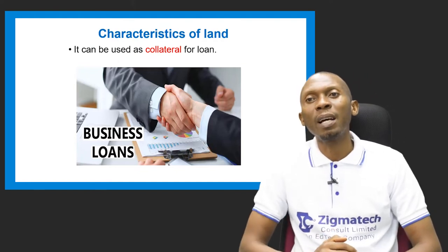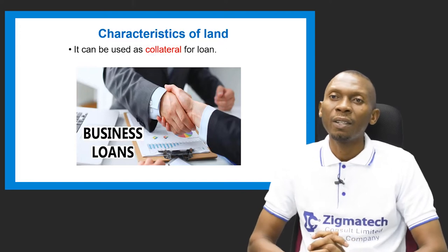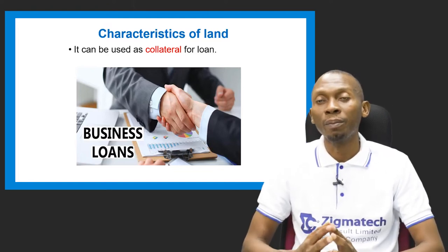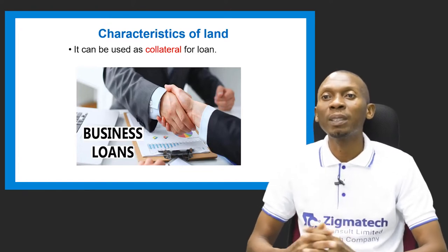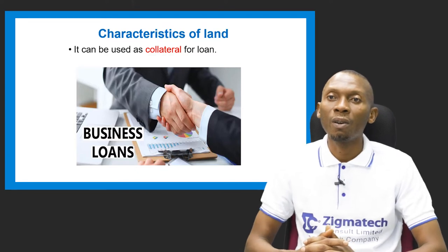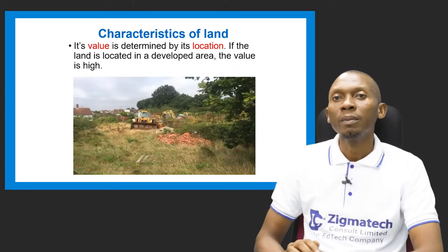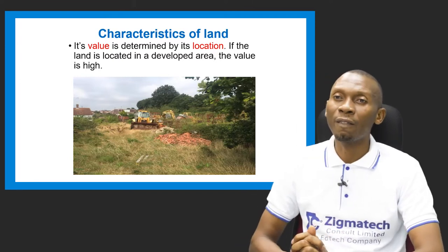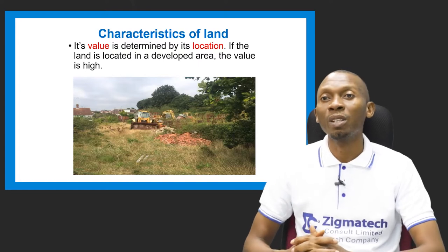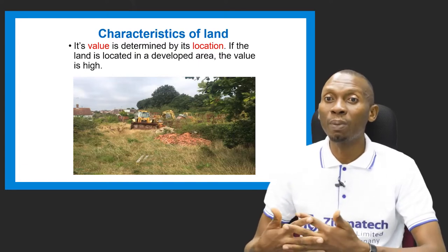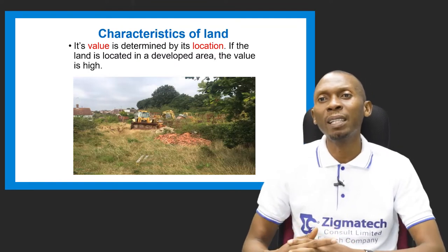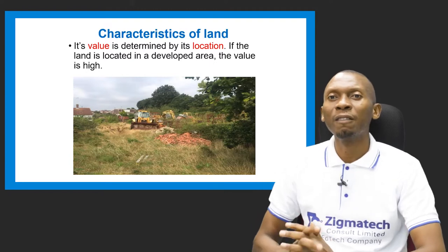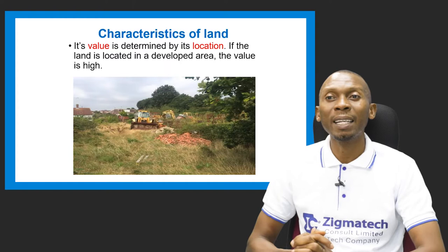Land can also be used as collateral for a loan because it is an asset. Collateral is what you give in exchange for monetary aid, so land can be used to obtain financial assistance from financial institutions. Its value is also determined by its location — land in a developed area with high population pressure commands a higher value than land in an undeveloped or rural area.